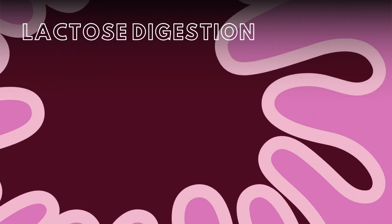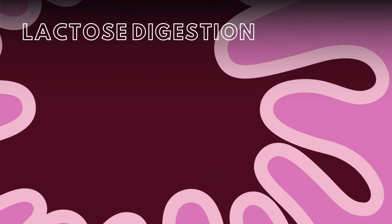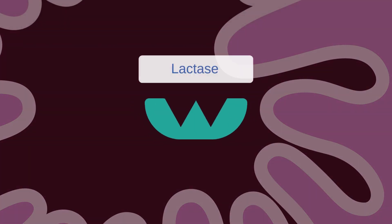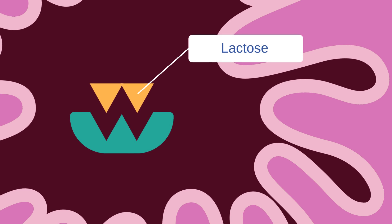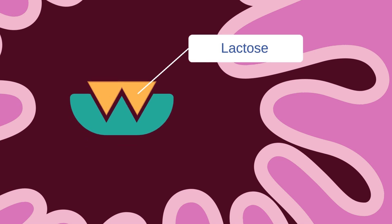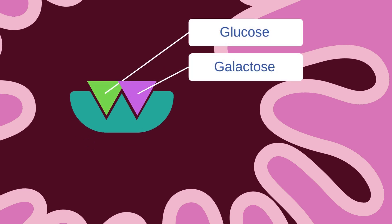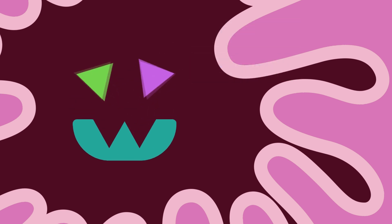The digestion of lactose requires the enzymatic action of lactase, produced by the microvilli of the mucosal epithelium in the small intestine. Lactase breaks down the disaccharide lactose into its two monosaccharides, glucose and galactose. This enzymatic activity is crucial for the absorption of glucose and galactose into the small intestine.